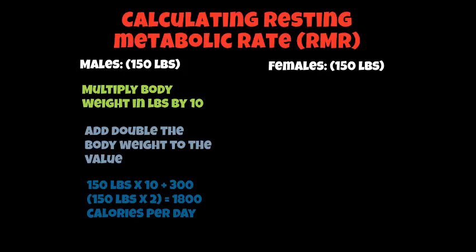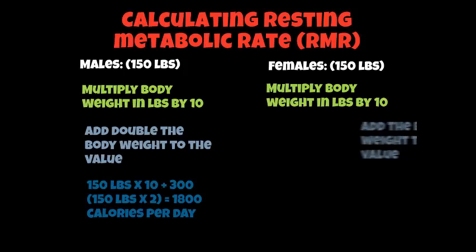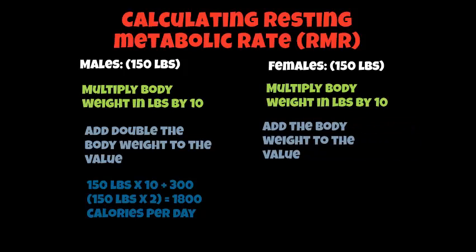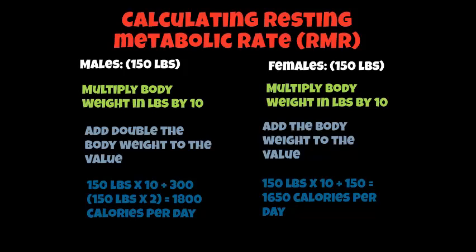For a female weighing 150 pounds: multiply your body weight in pounds by 10, but instead of adding double the body weight, you just add the body weight to the value. So 150 × 10 = 1,500, plus 150 equals 1,650 calories per day. If a female weighing 150 pounds sat around and did absolutely nothing, she would burn off 1,650 calories per day at rest.